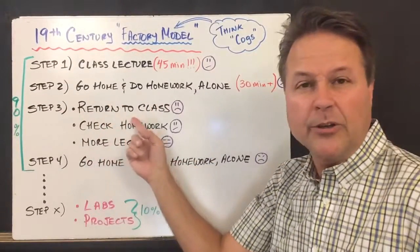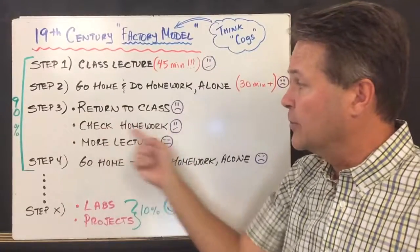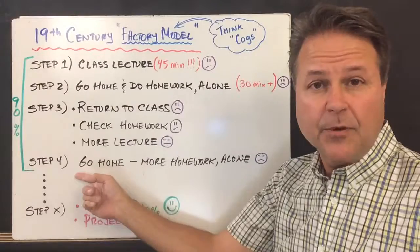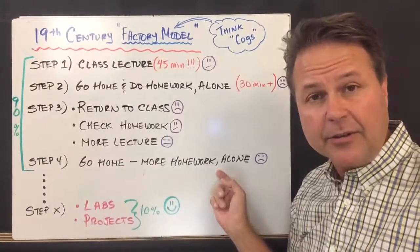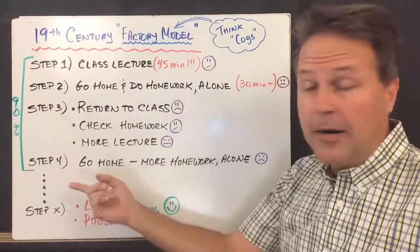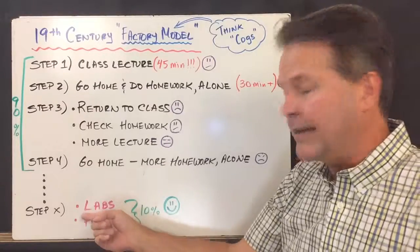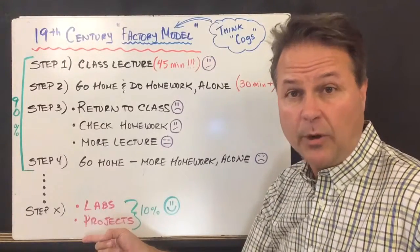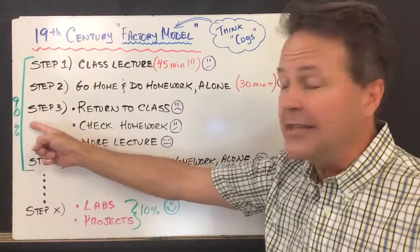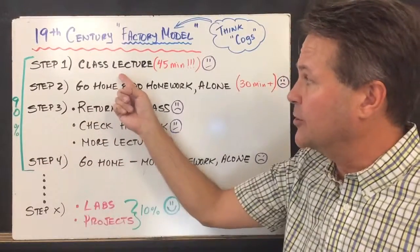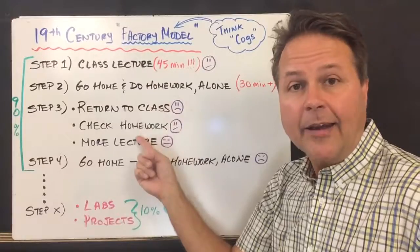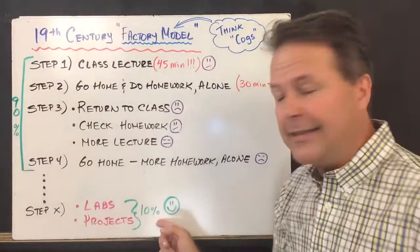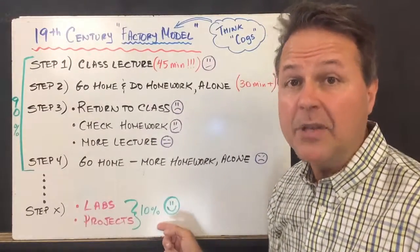Step three, we would return to class the next day, we would check our homework, we would have more lecture, and then step four, we would go home and repeat the cycle over and over again. About a week or two later, we would finally get to do a lab experiment, and maybe once every couple of months, we would work on a project. 90% of the time was spent on lecturing, homework, and repeating that process over and over again, and only 10% on the fun and meaningful stuff.